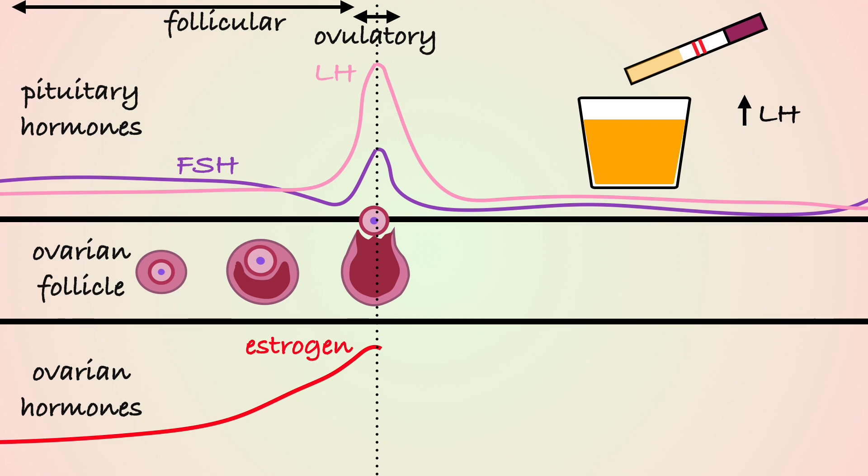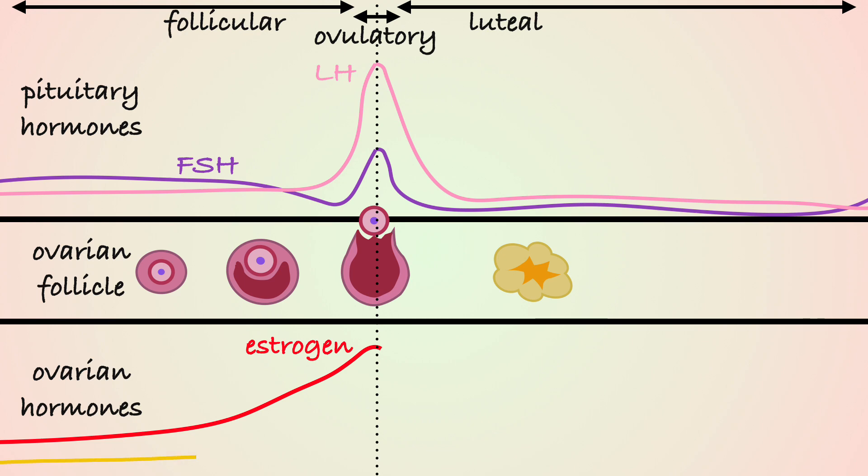The most fertile days, with the higher chances of getting pregnant, are the two days before ovulation and the day of ovulation. The luteal or post-ovulatory phase follows when the remaining follicle changes into corpus luteum that produces predominantly progesterone.